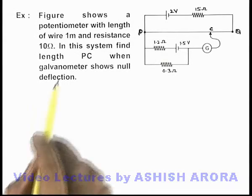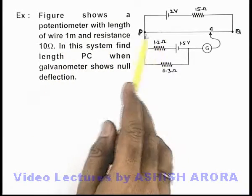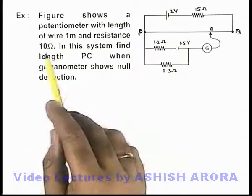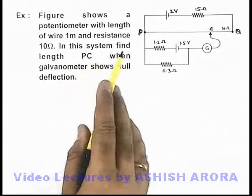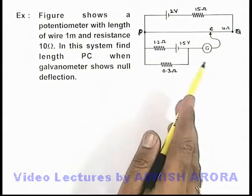In this example, the figure shows a potentiometer with length of wire 1 meter. Here the potentiometer wire is the wire PQ, and it is of resistance 10 ohm. In this situation we are required to find the length PC when the galvanometer shows null deflection.